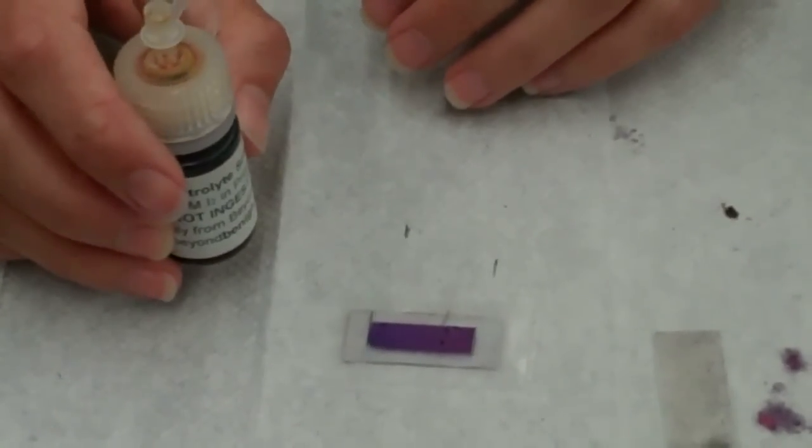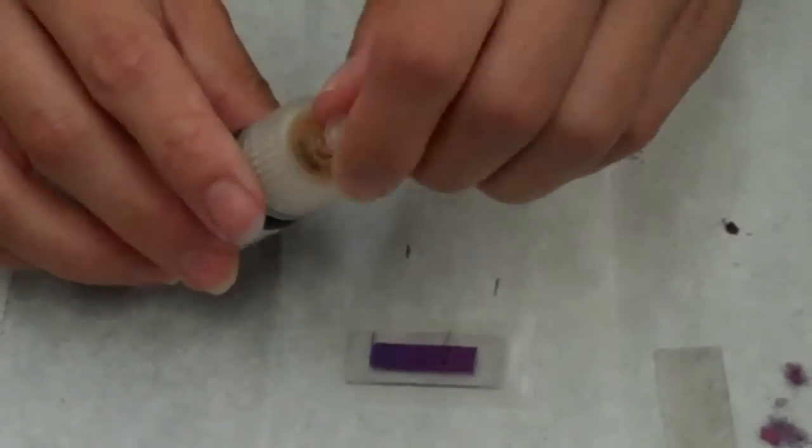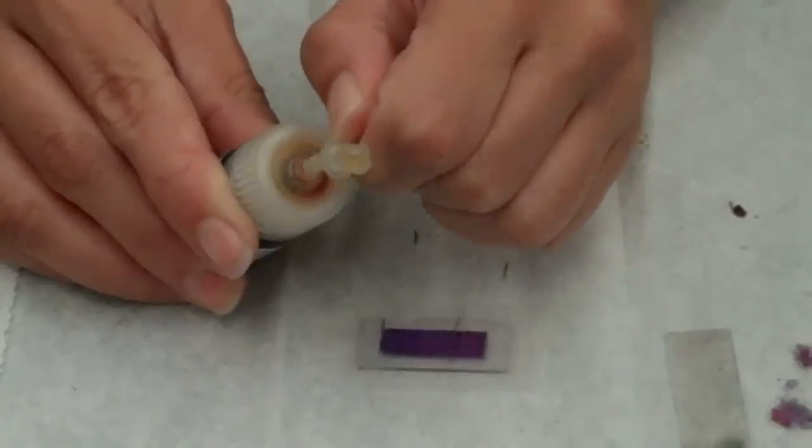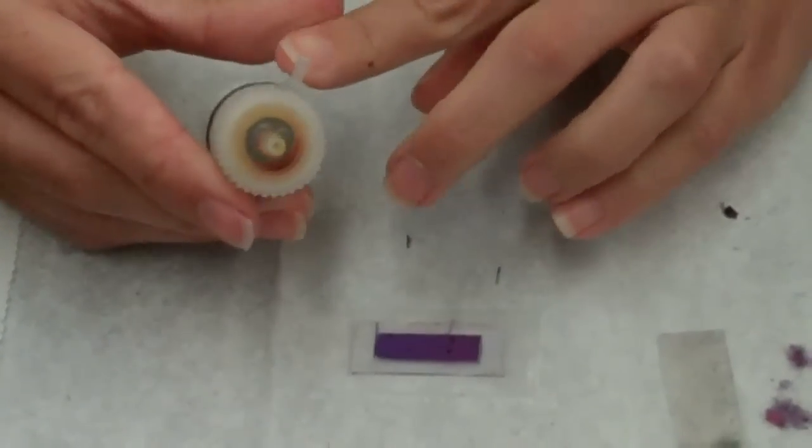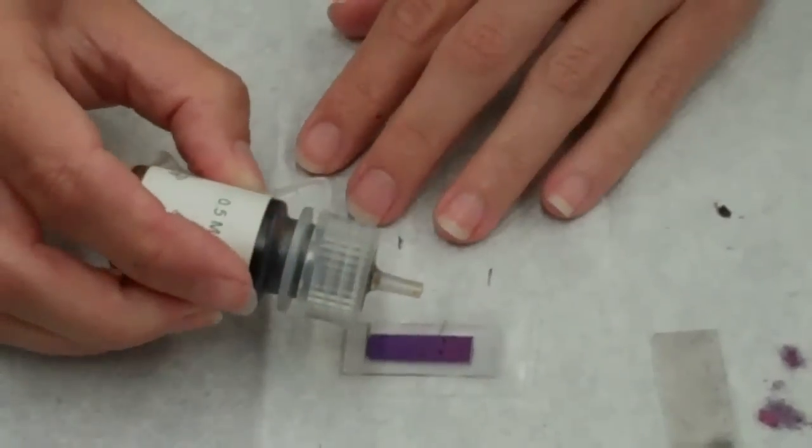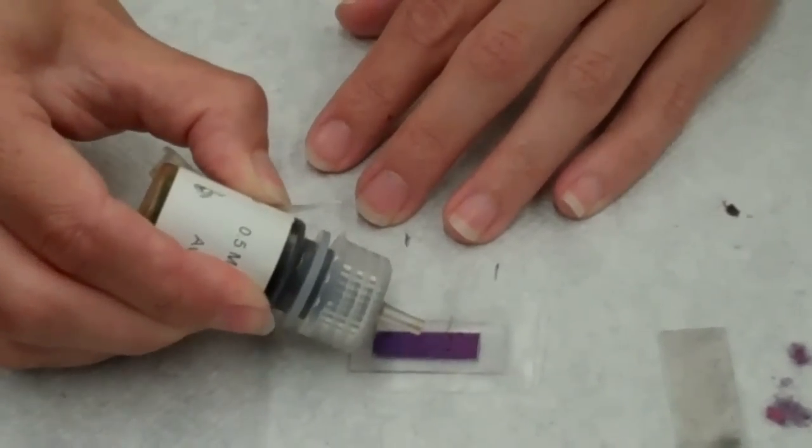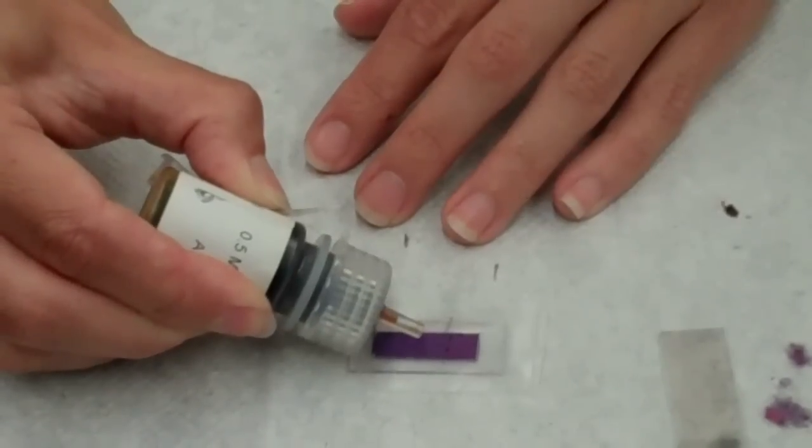At this point, you'll apply the electrolyte solution. We use a very small amount. In a dropper bottle such as this, you'll only use approximately half a drop. So the idea is to squeeze the smallest amount possible and touch it directly to the slide.